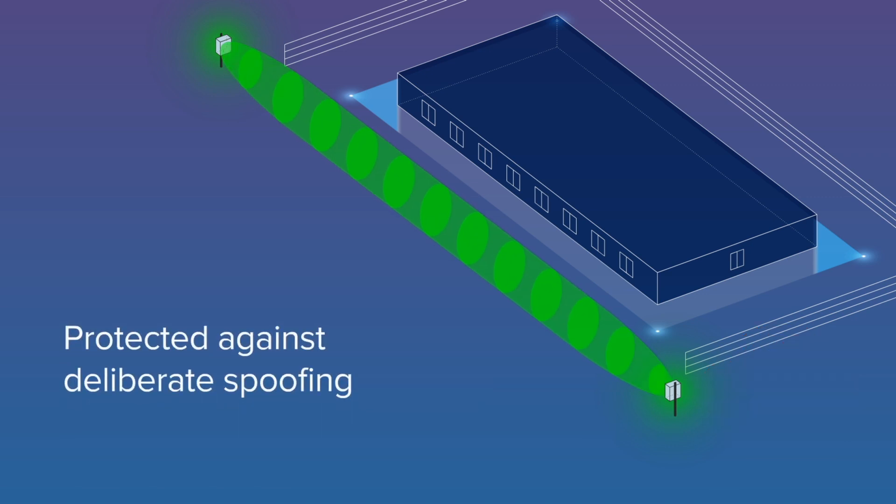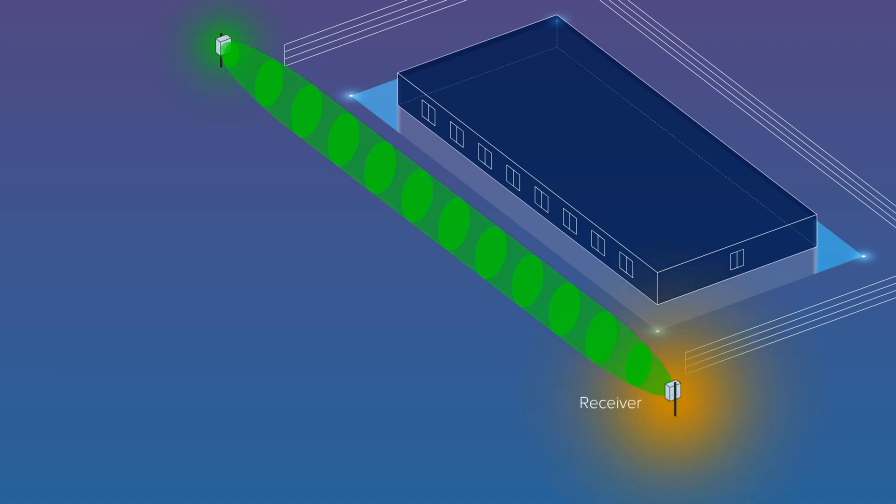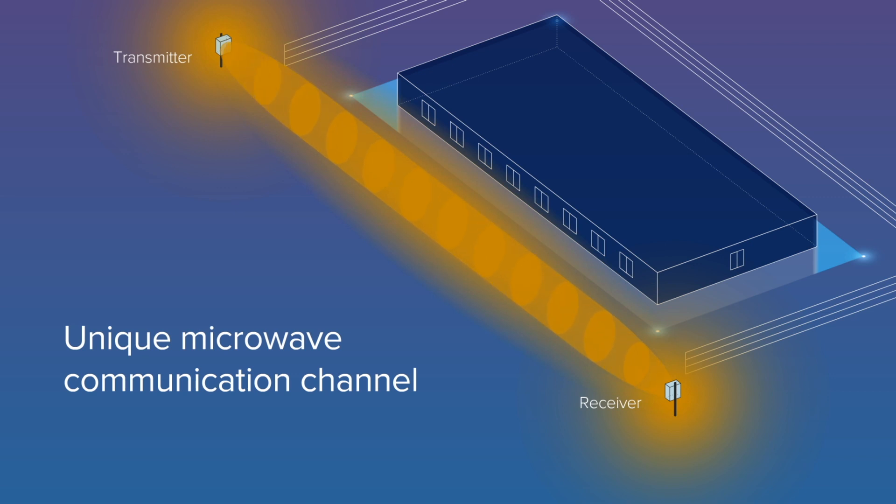To protect against deliberate spoofing or accidental misalignment, the Ultrawave receiver unit only recognizes its paired transmitter unit through a unique microwave communication channel between the devices.